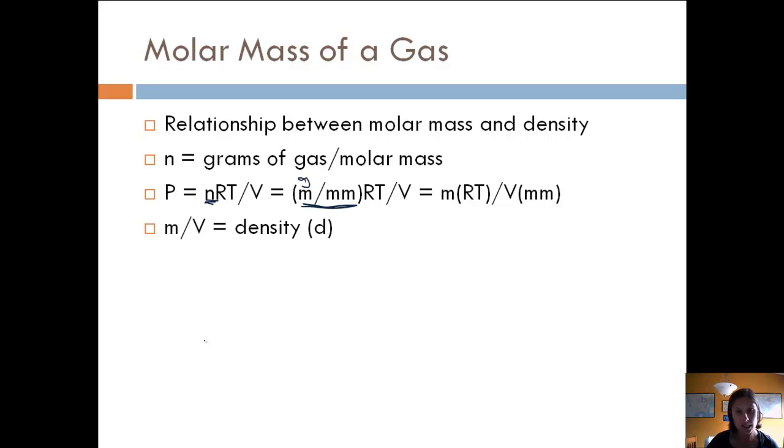We also know that density is equal to grams or mass per volume, or it's usually liters. So, if we take that value and plug it in, here we have mass on top, volume on the bottom. So, if we take this part and replace it with density, we end up with pressure equals density times R times temperature divided by molar mass. And if we rearrange that, we get that molar mass is equal to density times R times temperature divided by pressure. And we can use that to solve for molar mass, and we'll actually do that in a lab as well.